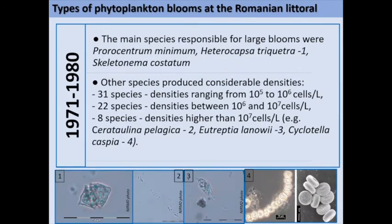In the next 10 years, the main species responsible for large blooms were Procentrum minimum, Heterocapsa triquetra, and Skeletonema costatum. Other species also produced considerable densities: 31 species recorded densities ranging from 100,000 to 1 million cells per litre; 22 species recorded densities between 1 million and 10 million cells per litre; and 8 species with densities higher than 10 million cells per litre. Among those species, the most important were Cerataulina pelagica, Eutreptiella gymnastica, and Cyclotella caspia.